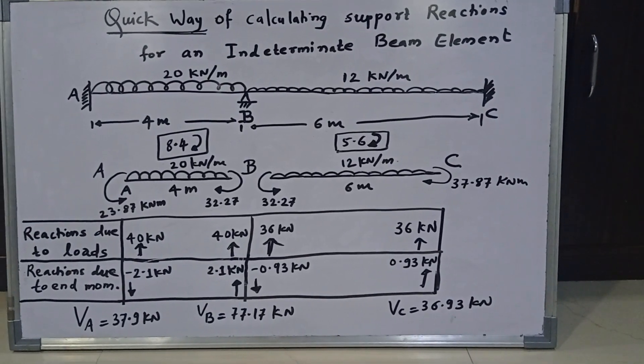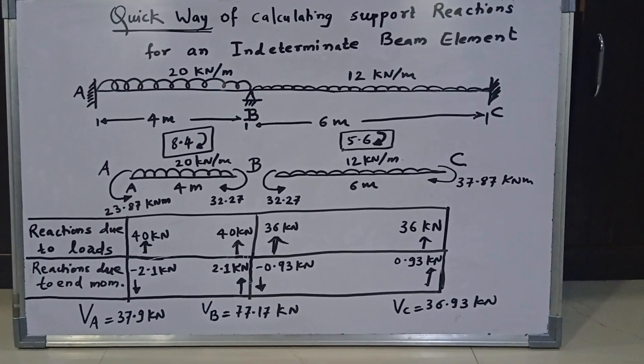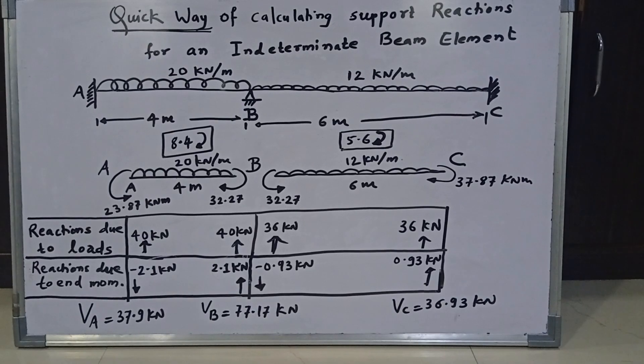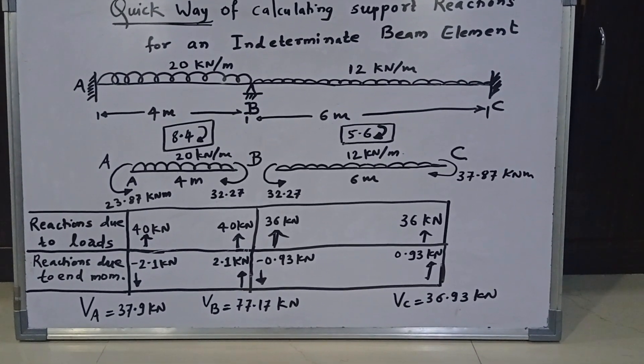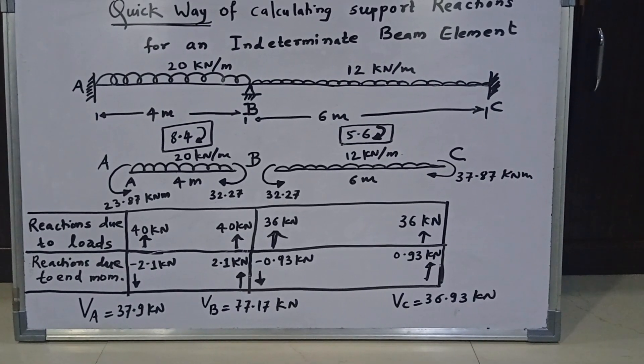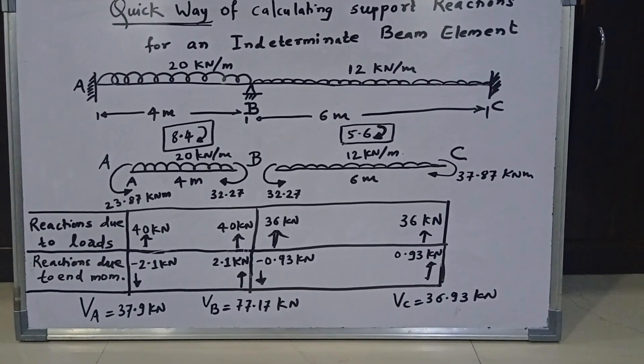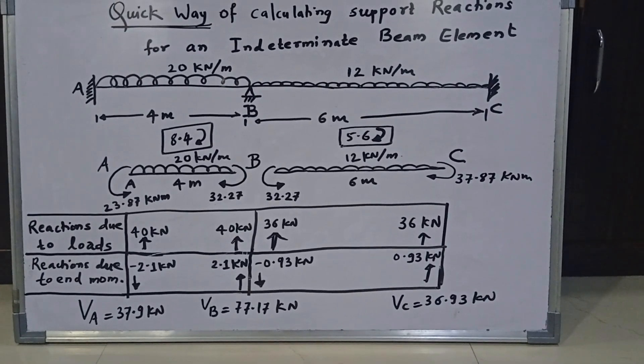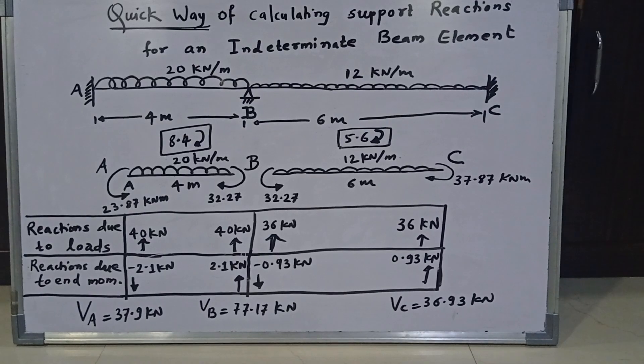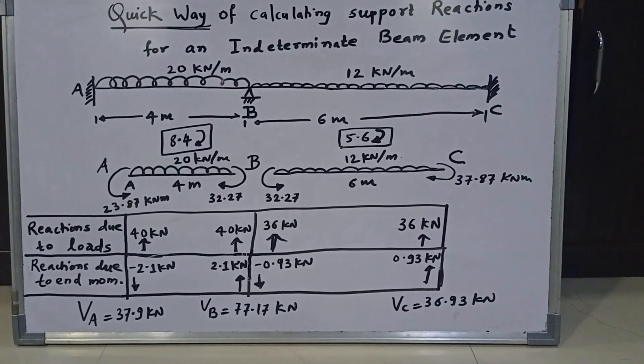Now to get VA, I have to simply add. So 40 minus 2.1 kN that is 37.9 kN. At B, it is 40 plus 36 plus 2.1 minus 0.93 that is 77.17 kN. And finally, at C, it is 36 plus 0.93 that is 36.93 kN.